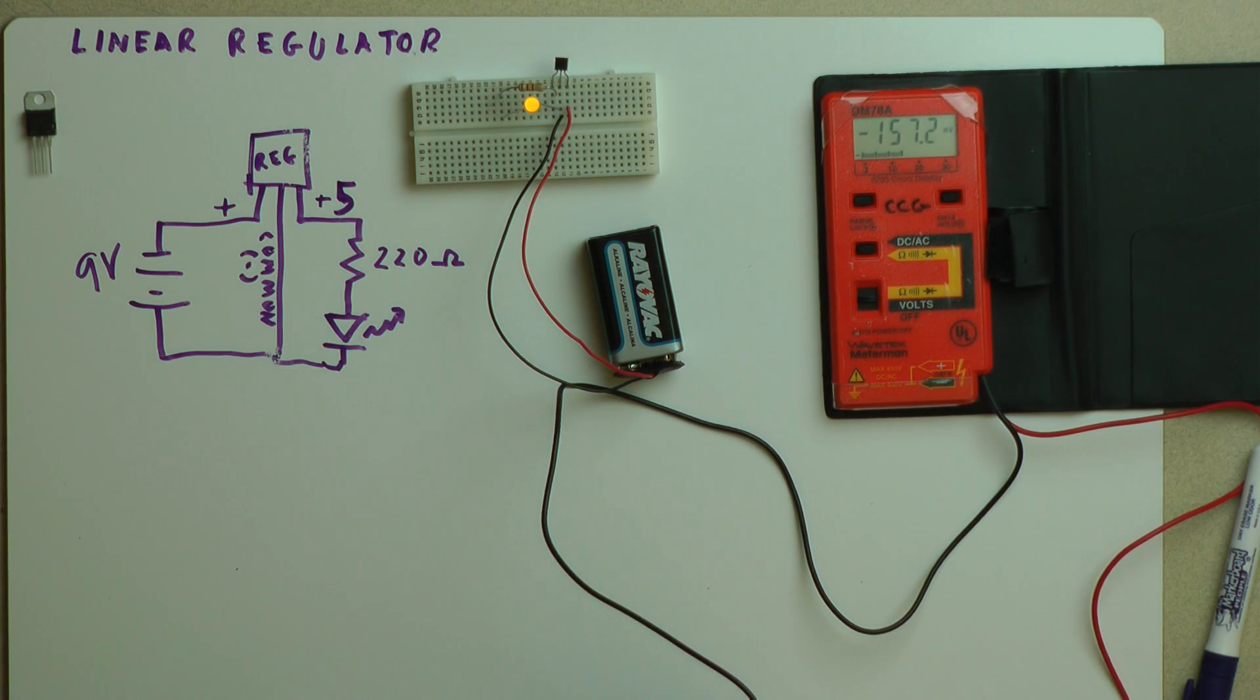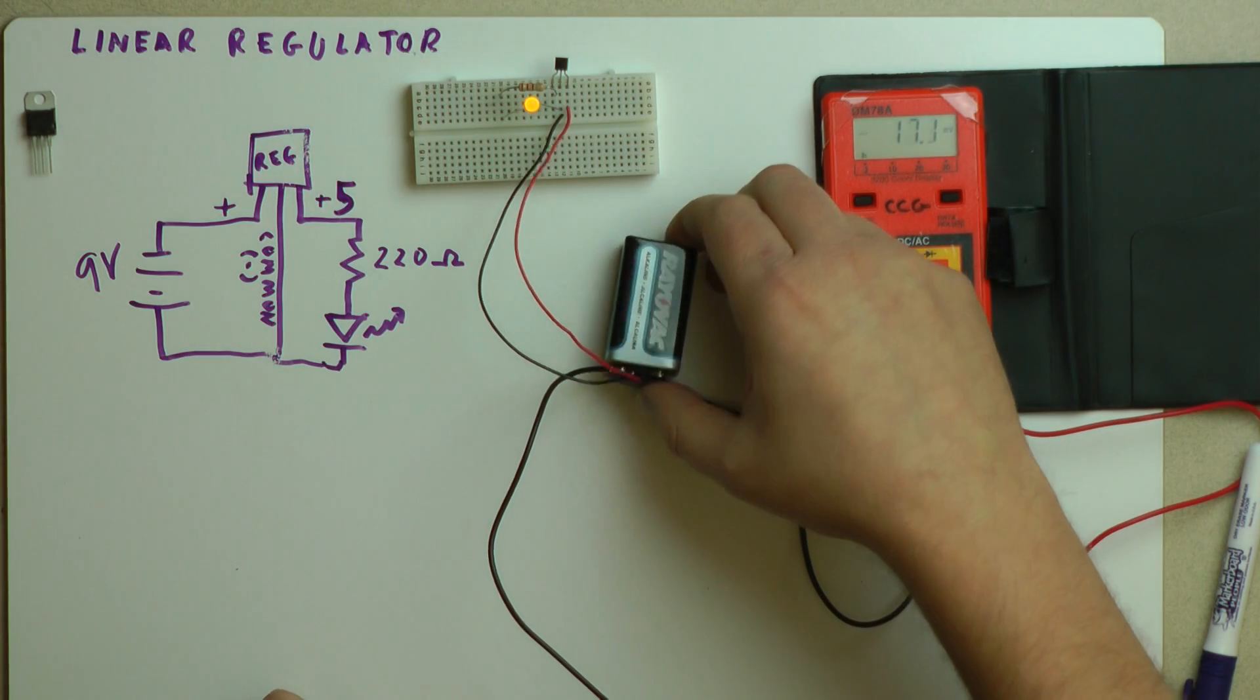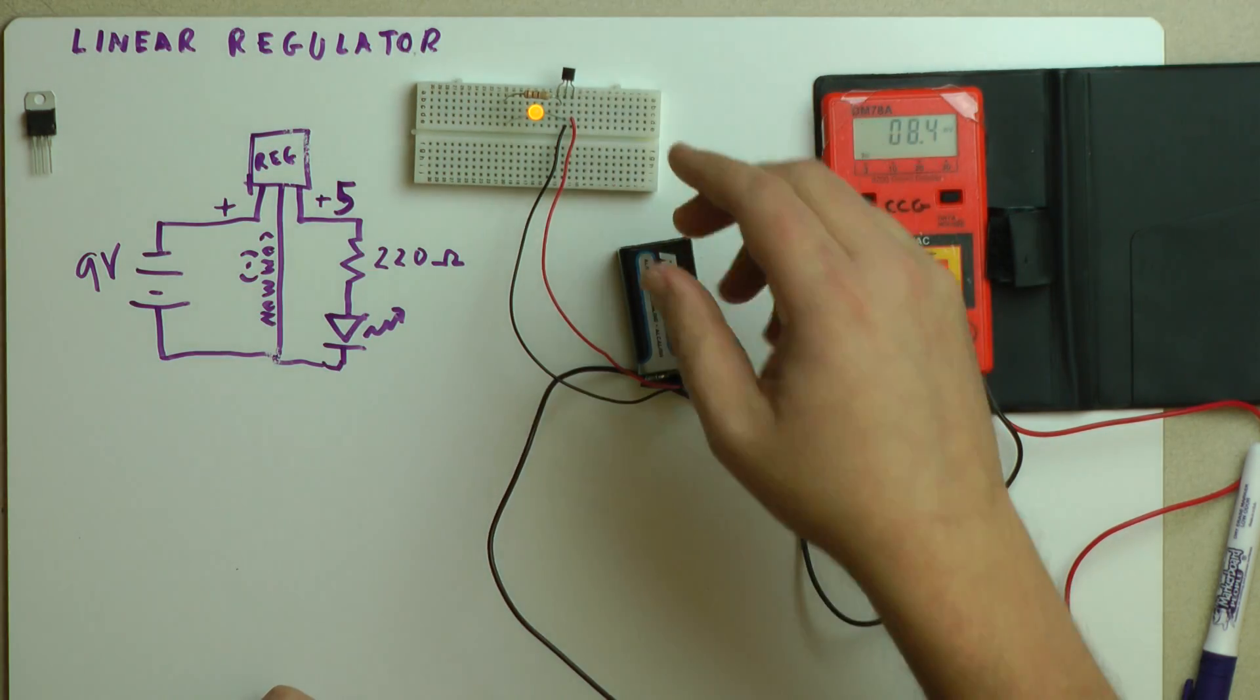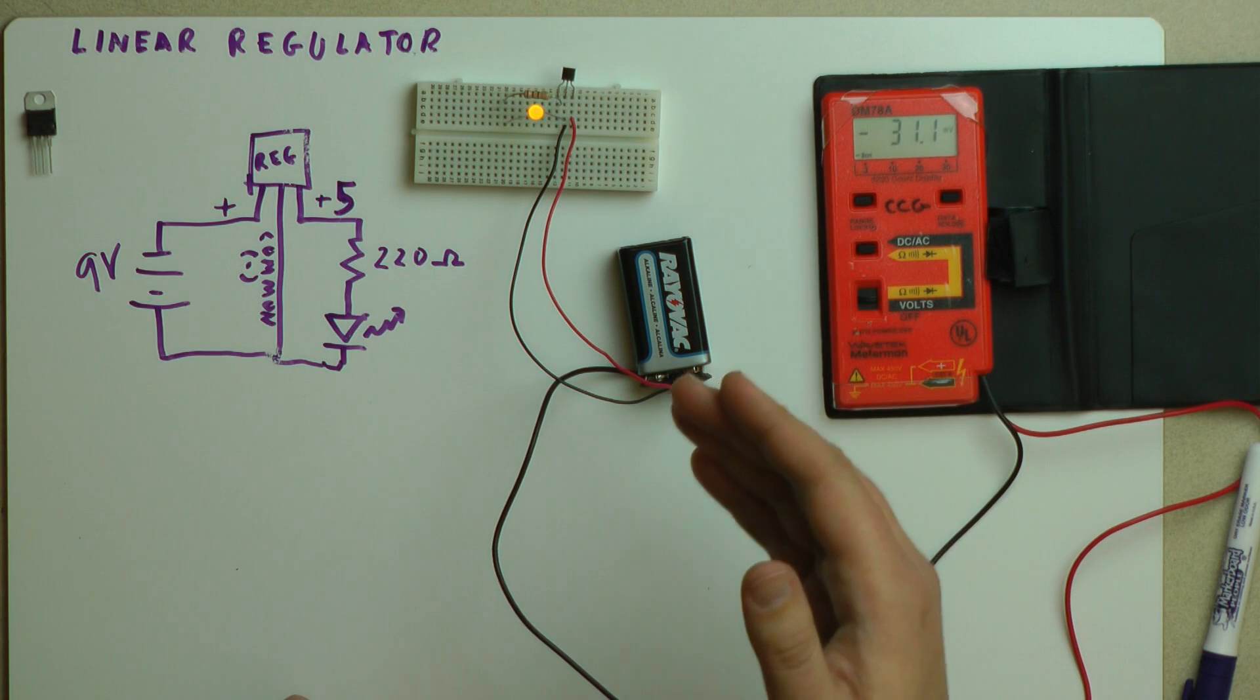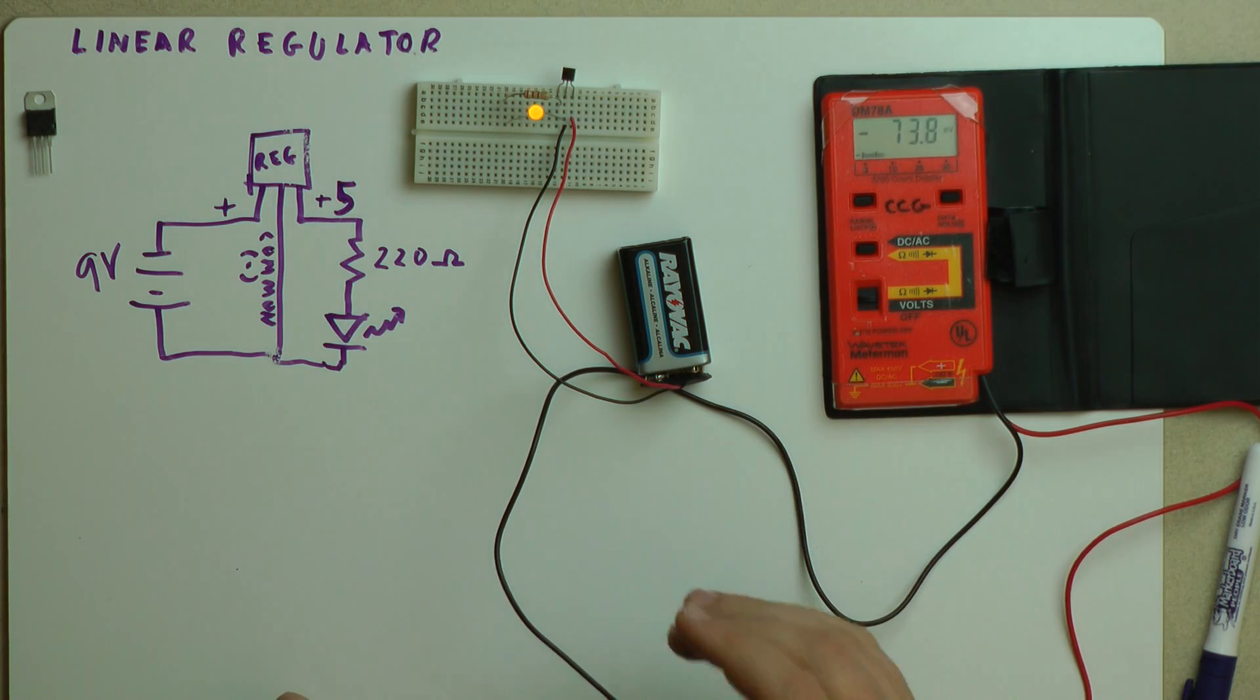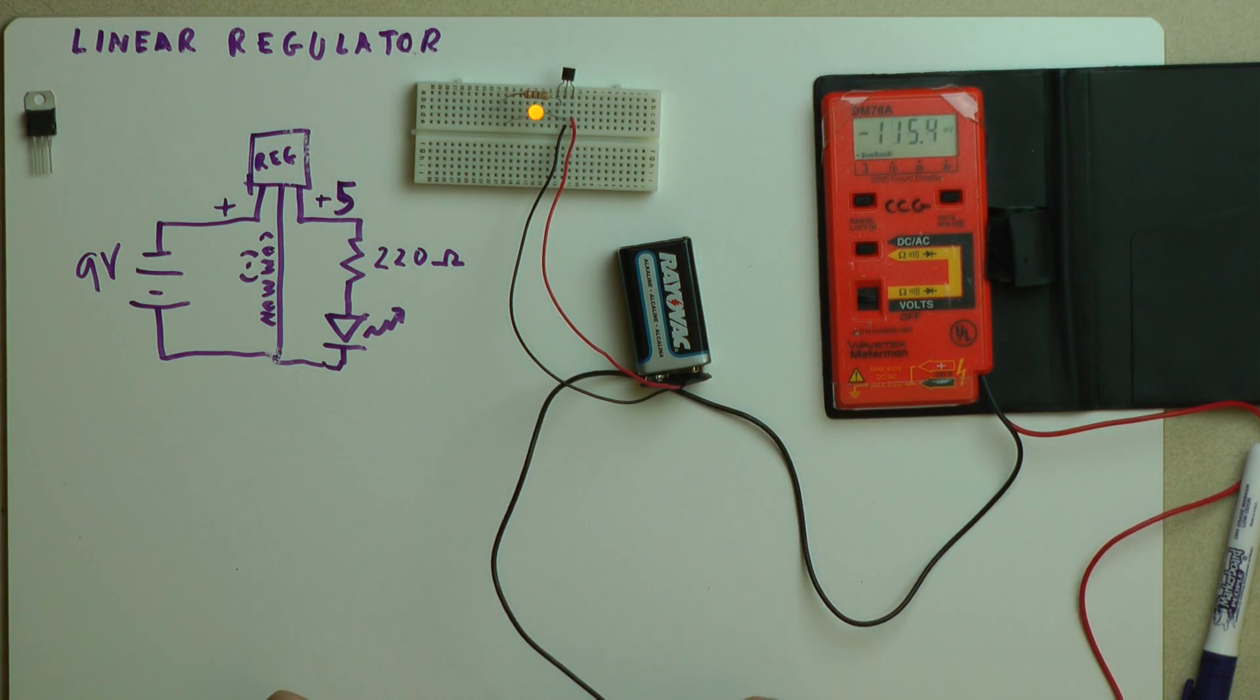This is Professor Thad Starner. Today we're going to talk about linear regulators. Linear regulators are used when we want to convert one voltage to another. Say I have something like this 9 volt battery, but yet I want to use it to power a 5 volt circuit, say like the Arduino we use in class. I use a linear regulator to do that.